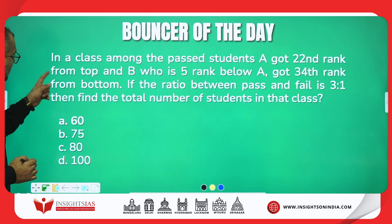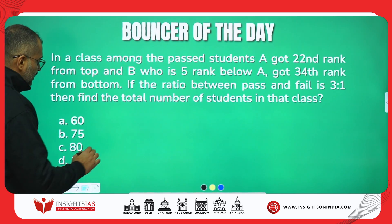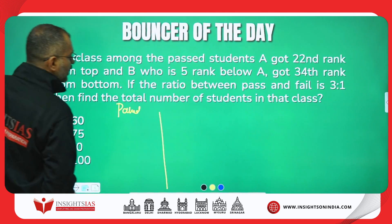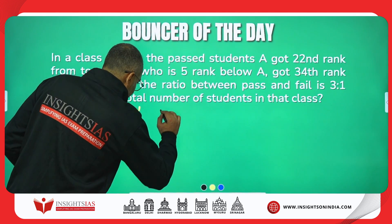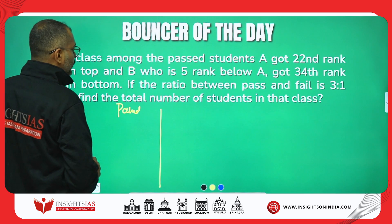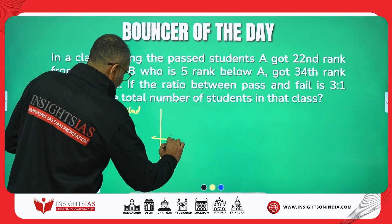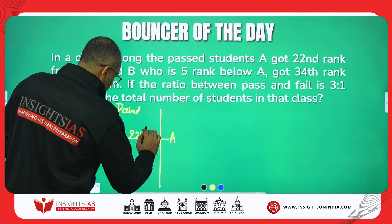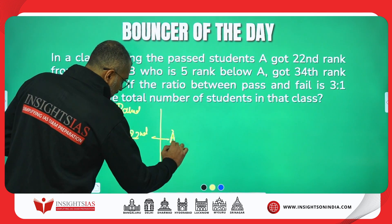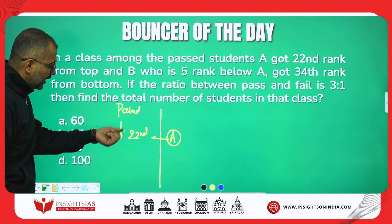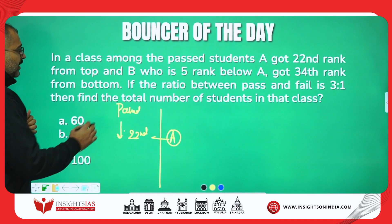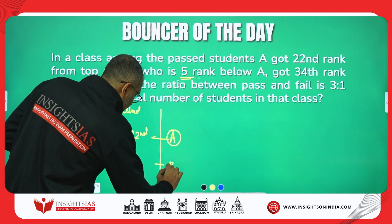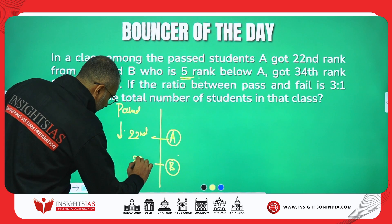In a class, among the past students, A got 22nd rank from the top. This is a list of past candidates. A got 22nd rank from the top. Indicators are very important in ranking. A is 22nd from the top, and B is five ranks below A — five ranks below A means B has to be 27th from the top.